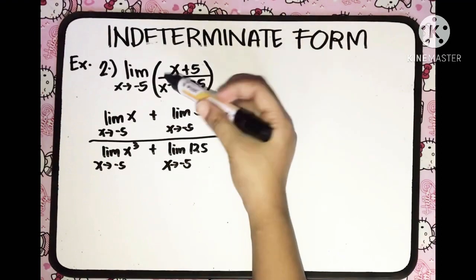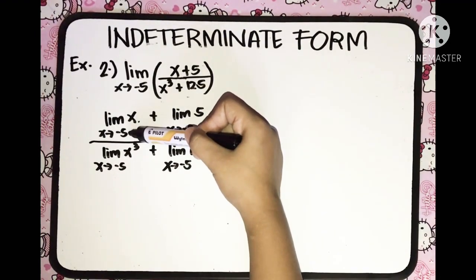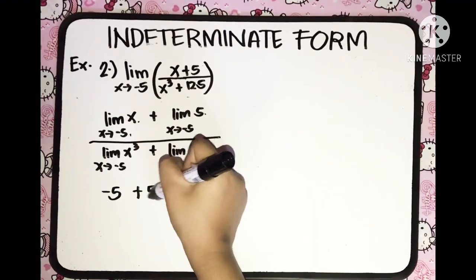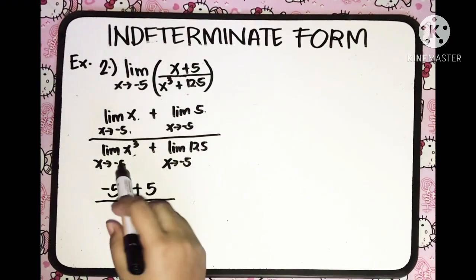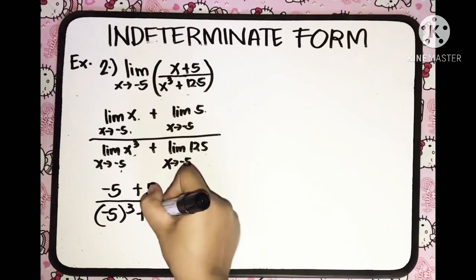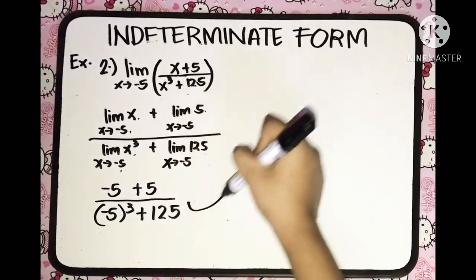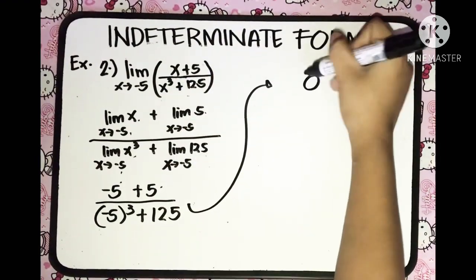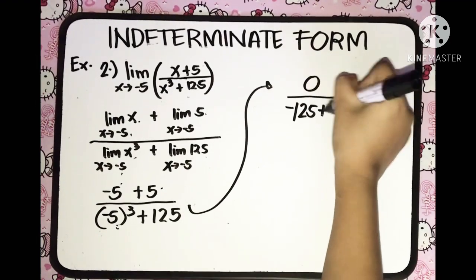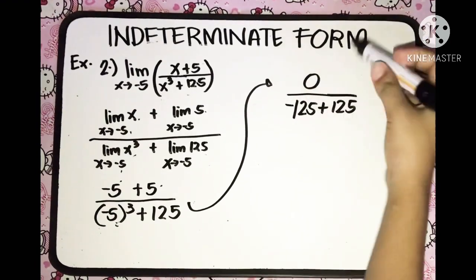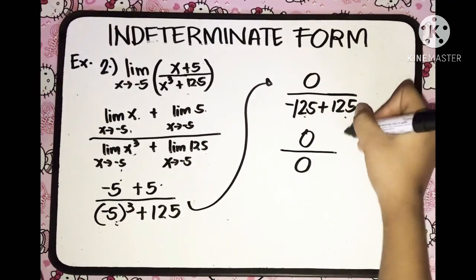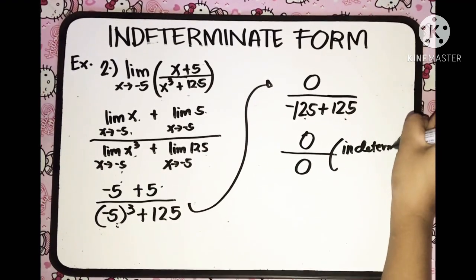Applying the limits: the limit of x as x approaches negative 5 is negative 5, plus the constant 5, over the limit of x cubed as x approaches negative 5, which gives negative 5 cubed, plus the constant 125. Simplifying: negative 5 plus 5 is 0. Negative 5 cubed is negative 125, plus 125 is also 0. So we have 0 over 0 — another indeterminate form. We're going to find another way again.